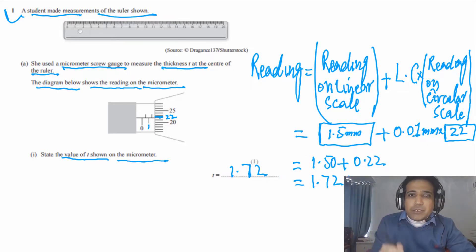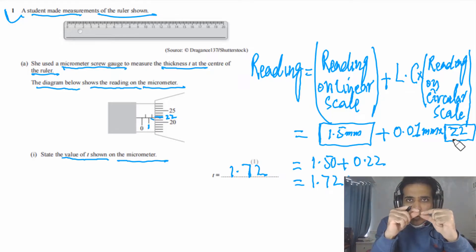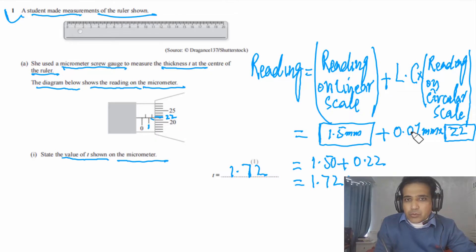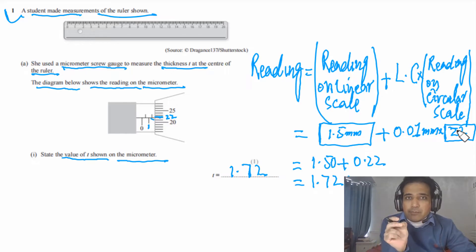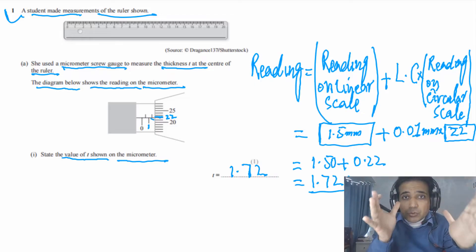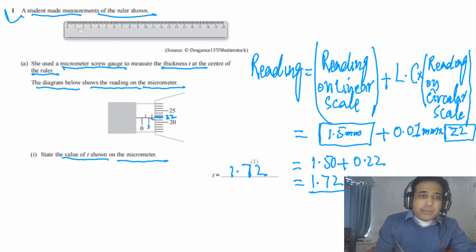To summarize: the linear scale reading is in millimeters, and the circular scale reading gives the number of divisions. When you move one division on the circular scale, it moves by 0.01 mm. So 22 divisions multiplied by 0.01 equals 0.22. Added to the linear scale reading, the final answer is 1.72 mm.